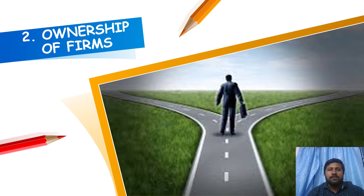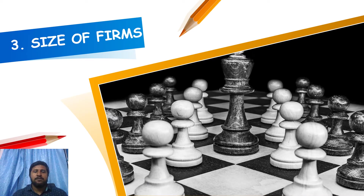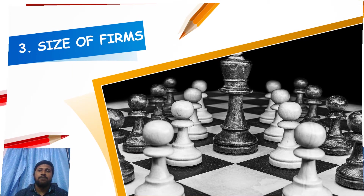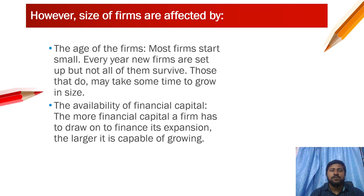Moving to the classification by ownership of firms: firms can belong to the private sector, public sector, or other forms depending on who owns the firm. Firms are also classified by size. The size of firms is usually measured by the number of workers employed, the output and market share, and the capital employed.